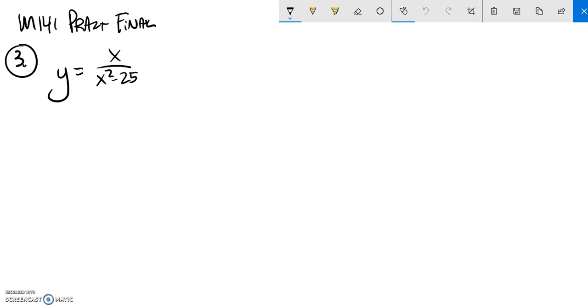Math 141 practice final, problem number three. We are supposed to sketch a graph of this function right here. The first thing I'm going to do is I know I can't divide by zero, so I'm going to deal with that.